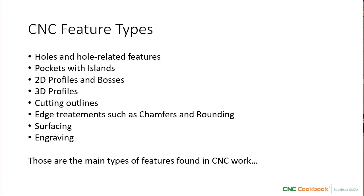First, let's look at what kinds of feature types there are in CNC work — this is going to be your most important factor in determining what kind of tool to use. The term 'feature' refers to the features on the part you're trying to make; a hole is a feature, for example. The basic feature types include holes and hole-related features such as threads or countersinking, pockets which may have islands, 2D profiles and bosses, 3D profiles, cutting outlines, edge treatments such as chamfers and rounding, surfacing, and engraving. The majority of these features use an end mill of one kind or another with just a few exceptions. This video is all about tooling for making holes, so that's where we're going to start.